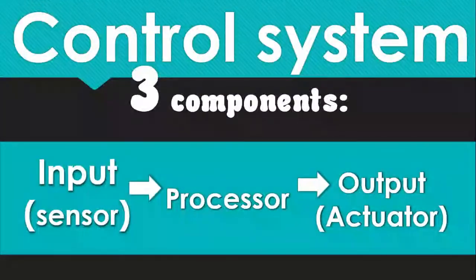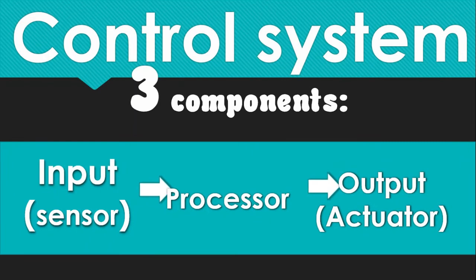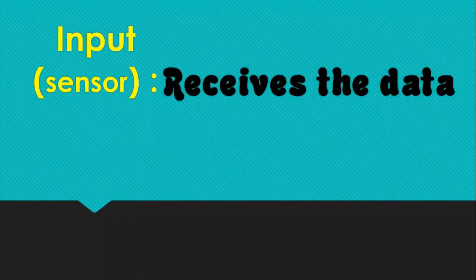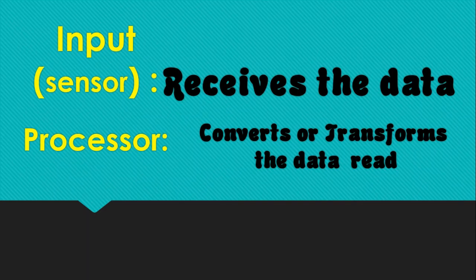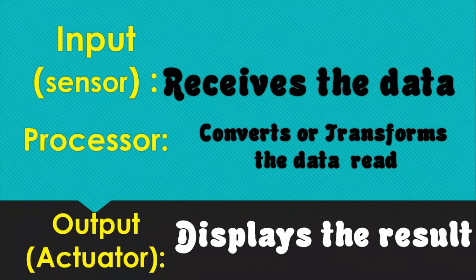So in all of this, this explains the concept of the control system: the input, the processing, and the output. The input is the sensor — it sends information to the processor. The processor reads the information and sends it to the output. There are three components of the control system: the input as the sensor, sending information to the processor, and then the output, which is the final result.